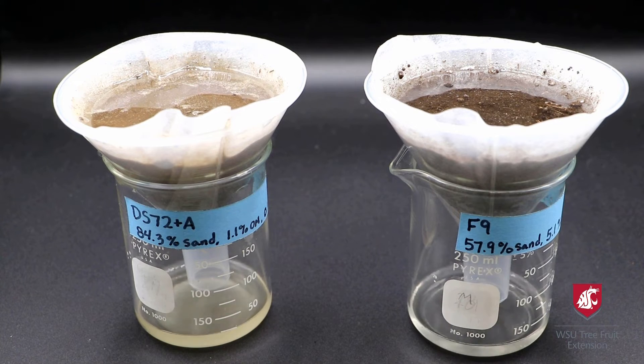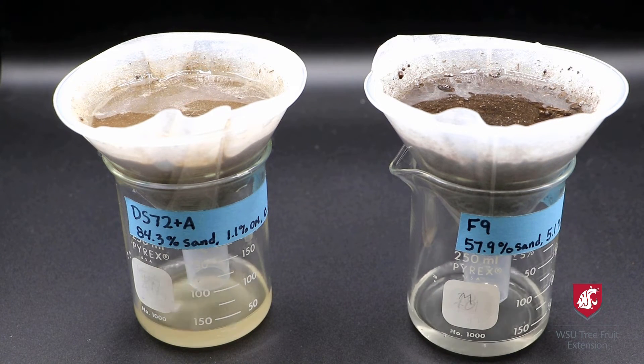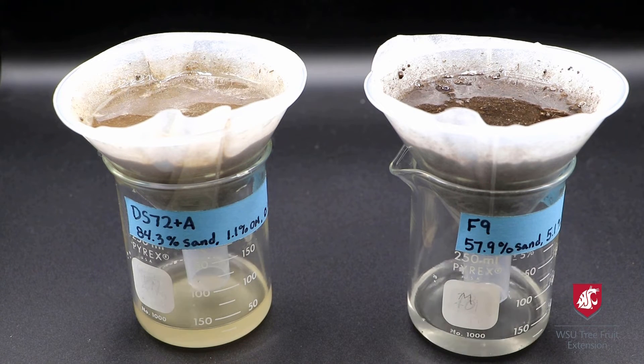In comparison, the orchard soil at right has less sand and 0.4 grams per gram of available water capacity.